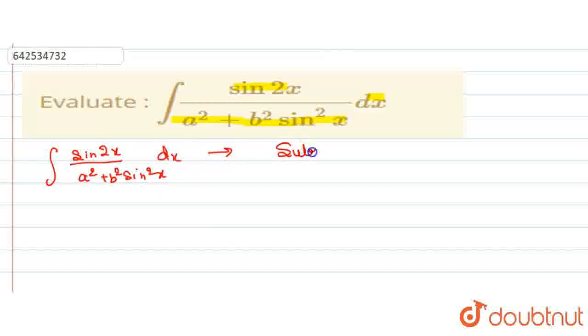We are first performing our substitution method. Here we are substituting a squared plus b squared sin squared x will be equal to t. After taking the derivative of this, we get our answer.